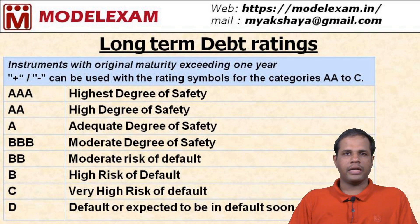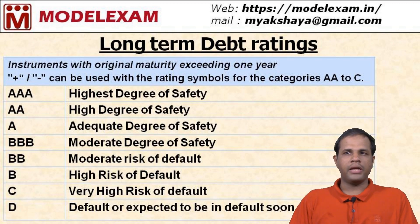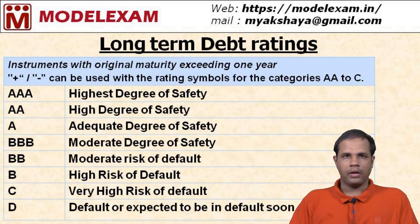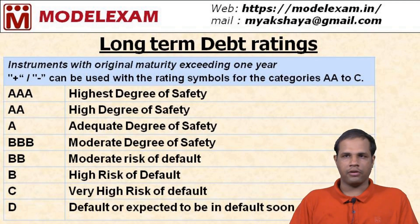The ratings can be AAA, AA, A, BBB, BB, B, C, and D. AAA stands for highest degree of safety. AA stands for high degree of safety. A stands for adequate degree of safety.